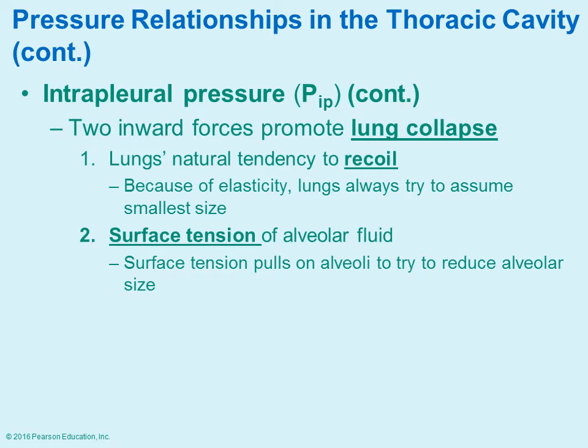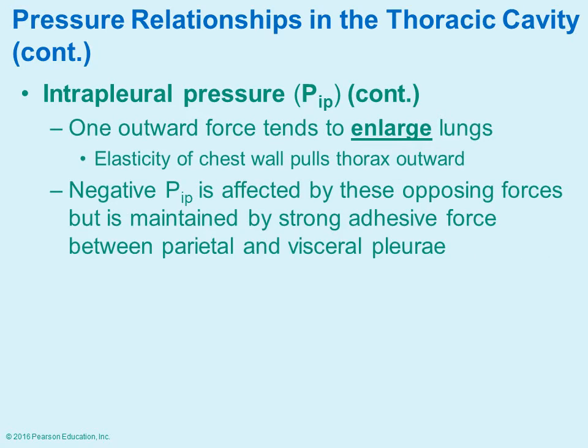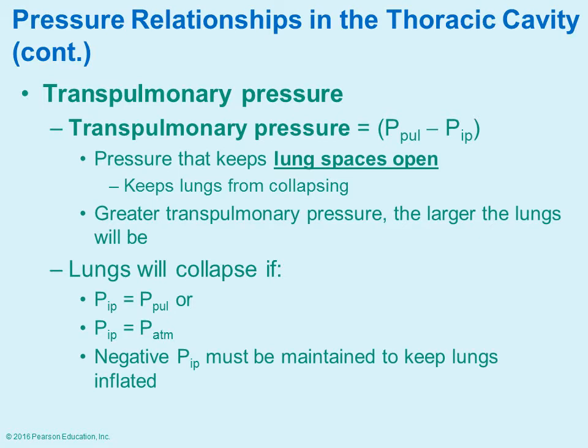The intrapleural pressure helps to promote certain things. You obviously do not want the lungs to collapse. The natural tendency of the lungs, because of their elasticity, is that they want to recoil and become the smallest size, and you don't want that to happen. There's also surface tension of the alveolar fluid. To try to enlarge the lungs, you're going to see movement of the thoracic cage, changing its volume. These opposing forces work together to maintain the proper pressure within that pleural cavity.